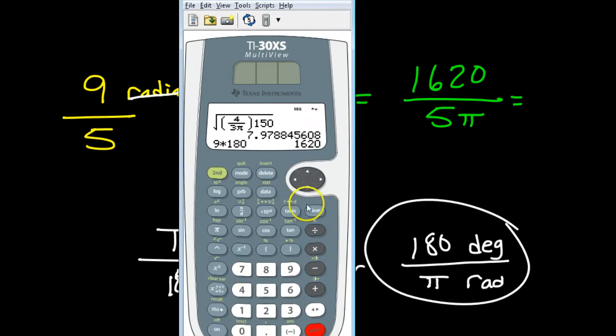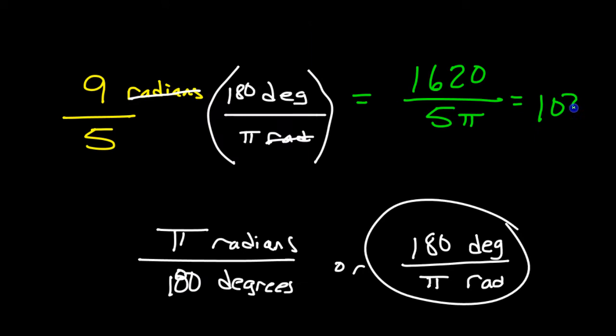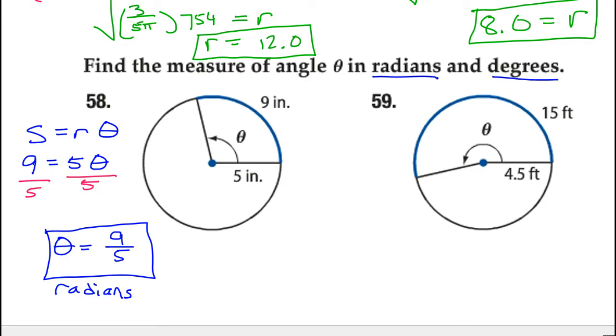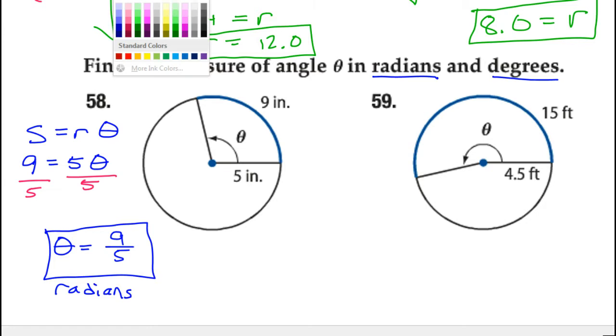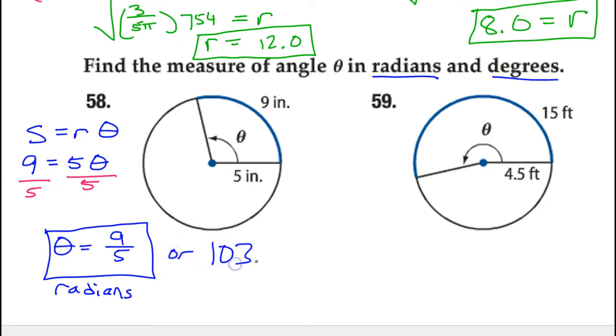So let's see. 1,620 over 5 pi. So this is approximately 103.1 degrees. Let's go ahead and record that over here.